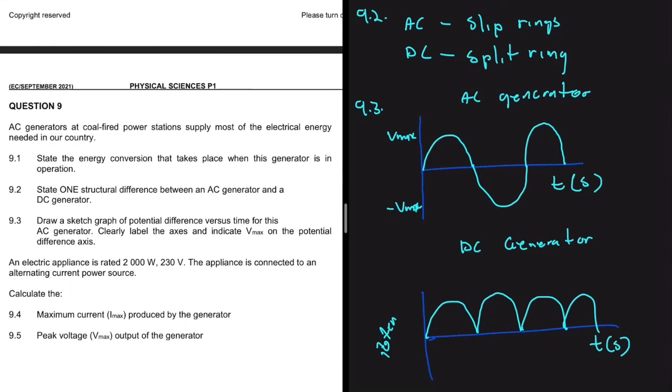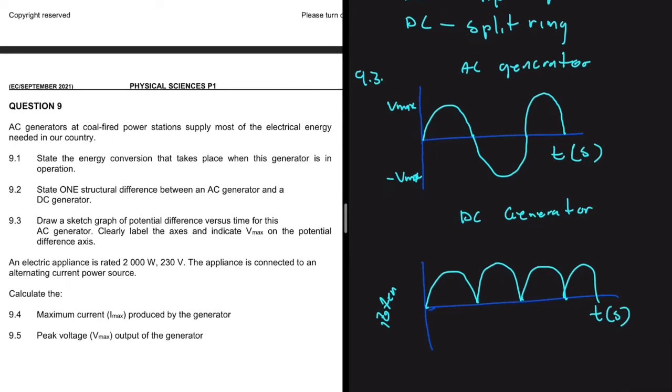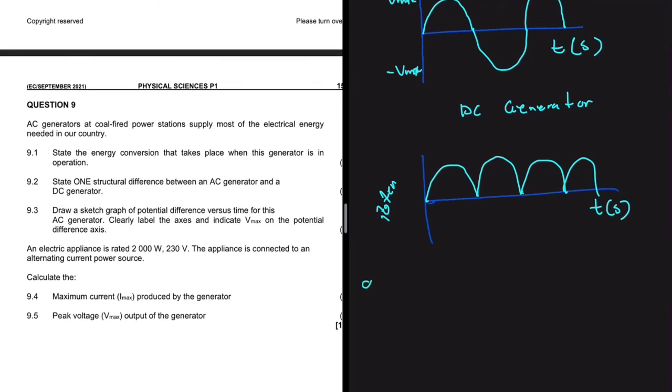And so on. So that's what you sketch when we want the potential versus time for an AC and for a DC.